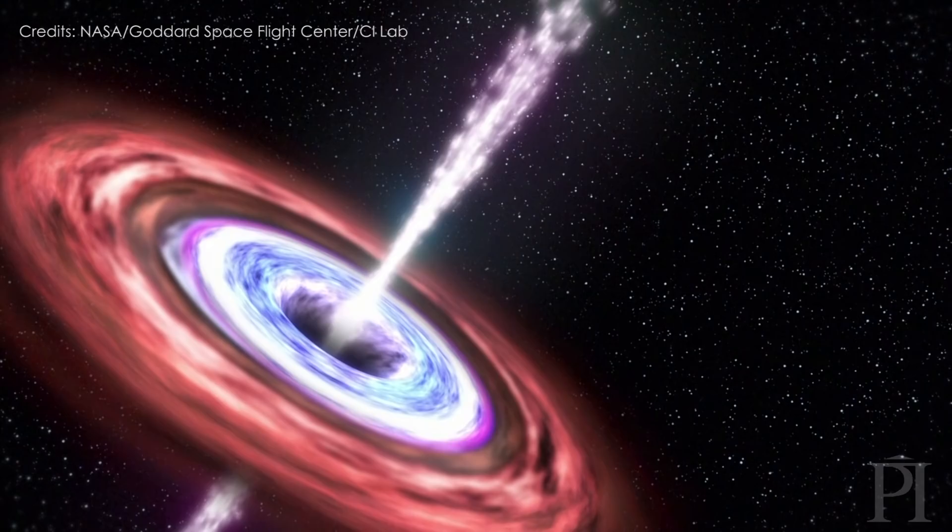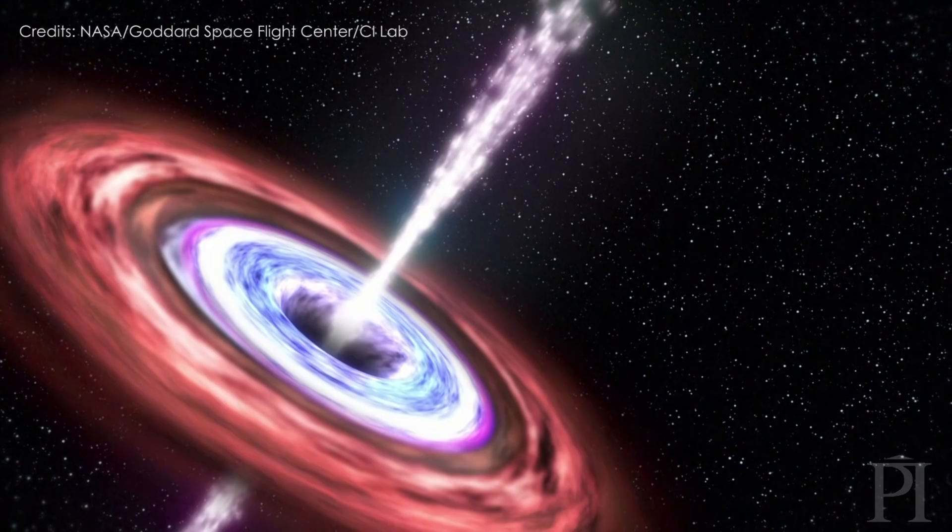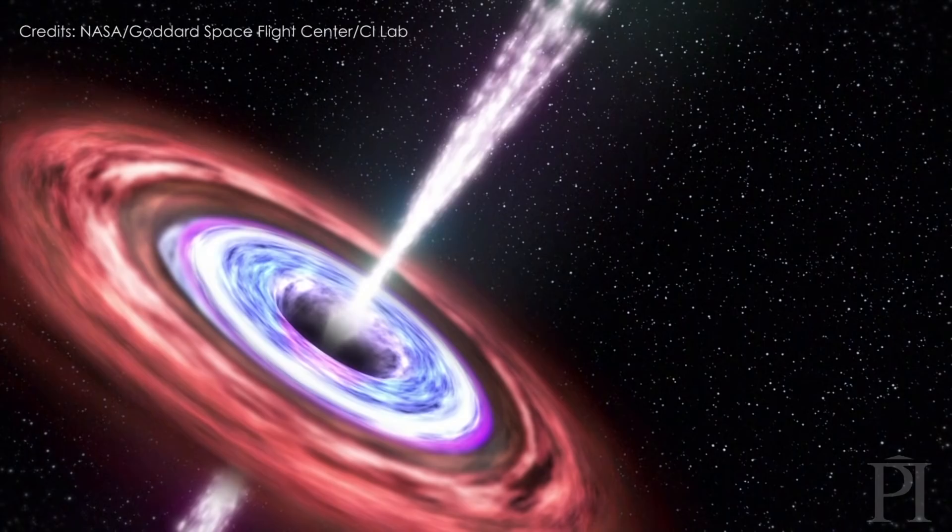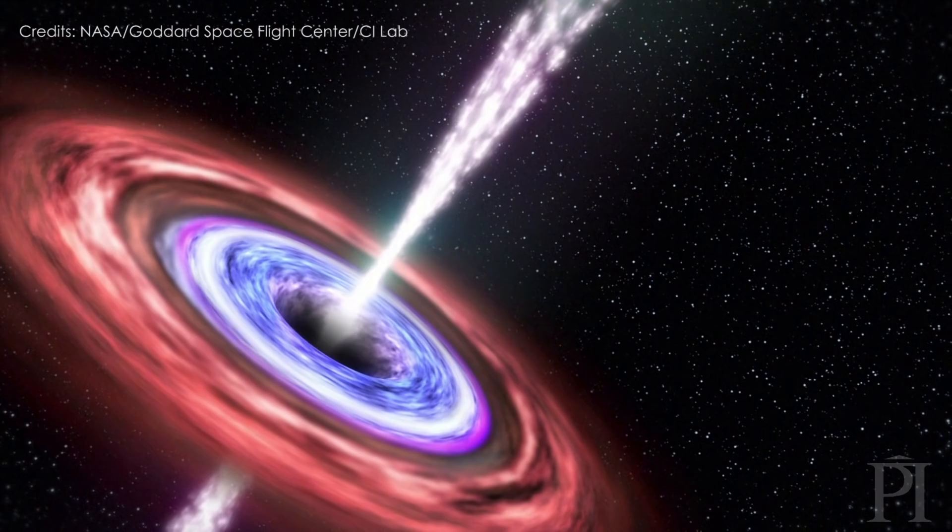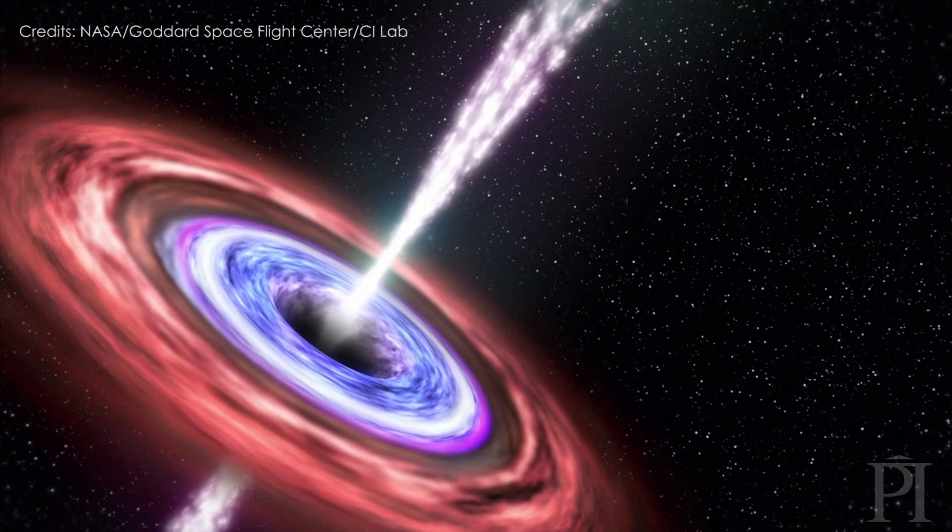It also makes it the optimal target for the Event Horizon Telescope. It has a diameter of about 50 microarcseconds. So imagine you were to cut the Moon into 35 million slices. Then the thickness of one of these slices would be about the diameter of the shadow. This is super, super tiny, and yet we can resolve it.